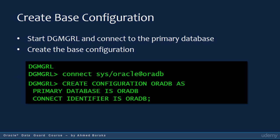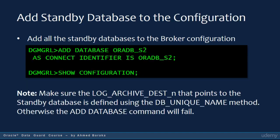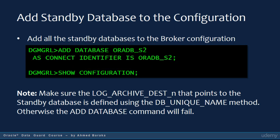Create the base configuration in the configuration files by connecting to the primary database in DGMGRL and running: CREATE CONFIGURATION oradb AS PRIMARY DATABASE IS oradb CONNECT IDENTIFIER IS oradb. After starting the broker processes, add all standby databases to the broker configuration using the ADD DATABASE command. For example: ADD DATABASE oradb_s2 AS CONNECT IDENTIFIER IS oradb_s2.